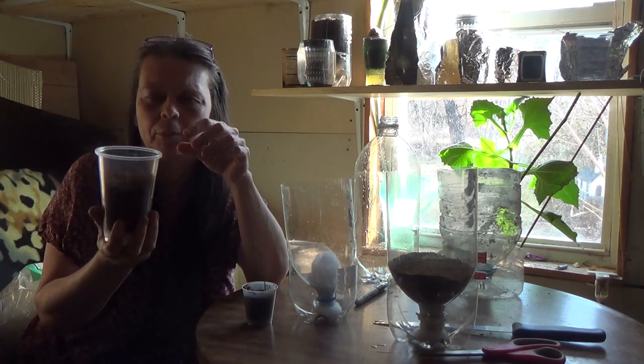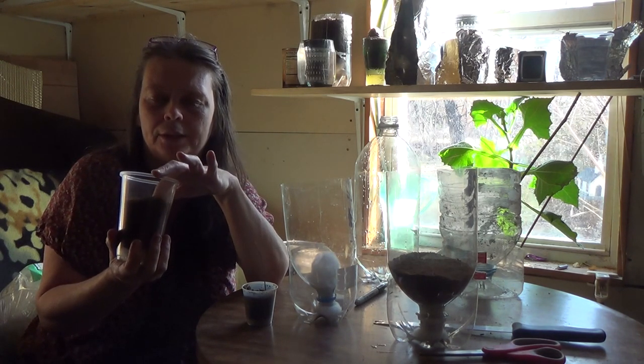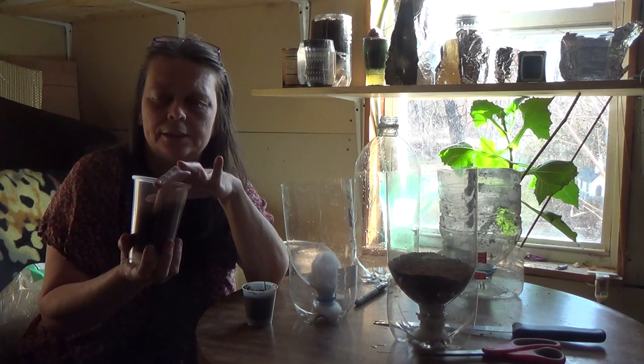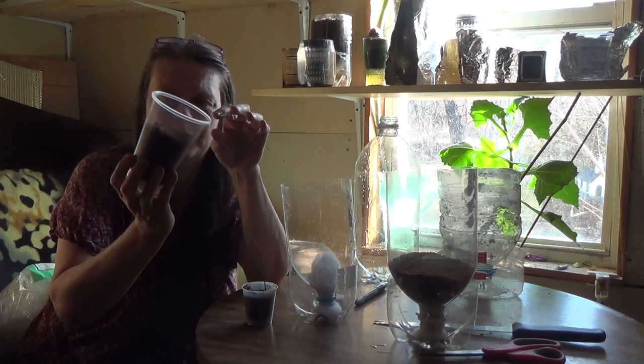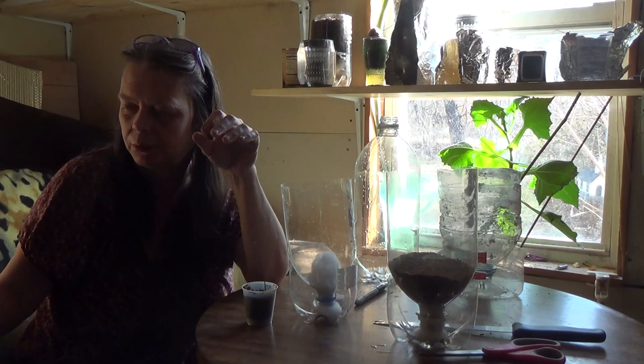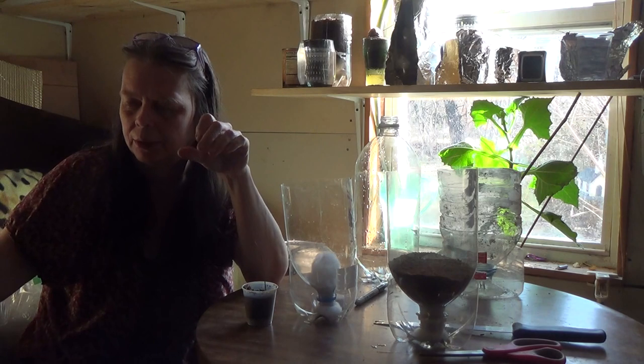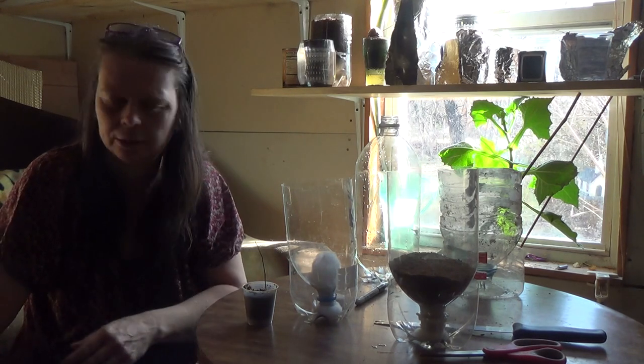So I'm going to go back to peat moss with vermiculite for my seed starting and mix in some of this with it to use it up. But I'm going to give up probably on coconut coir.